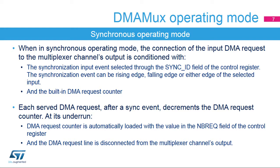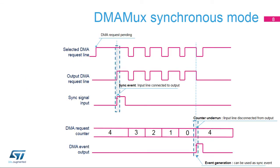Upon the synchronization event, the selected DMA request line is connected to the multiplexer channel's output. From this point, each served DMA request — transition 1 to 0 on the selected DMA request line — decrements the DMA request counter. At its underrun, the DMA request counter is automatically loaded with the value in the NBREQ field of the control register, and the DMA request line is disconnected from the multiplexer channel's output. Thus, the number of DMA requests transferred to the multiplexer channel's output following a synchronization event is the value of the NBREQ field plus 1.